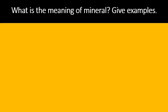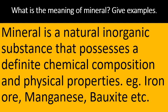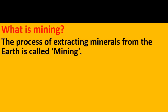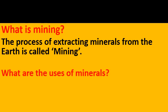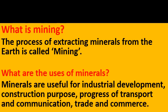Now let us see some important question answers. What is the meaning of mineral? Give an example. A mineral is a natural inorganic substance that possesses a definite chemical composition and physical properties. Examples: iron ore, manganese and bauxite. What is mining? The process of extracting minerals from the earth is called mining. What are the uses of minerals? Minerals are useful for industrial development, construction purposes, progress of transport and communication, and trade and commerce.